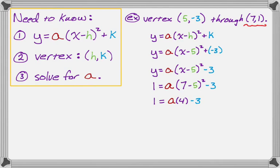Now we can add 3 to both sides, and get that 4a is equal to 4, divide by 4, and I get that a is equal to 1. Since a is equal to 1, we don't usually write that, so then our equation will look like y equals the quantity x minus 5 squared, and then minus 3.